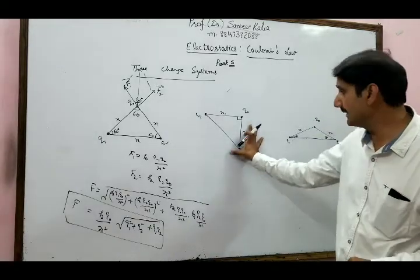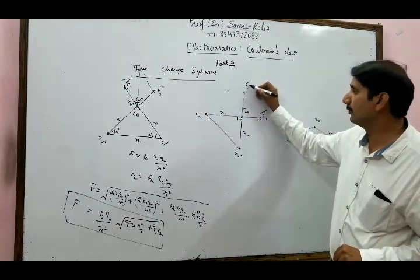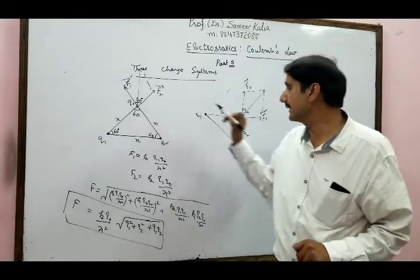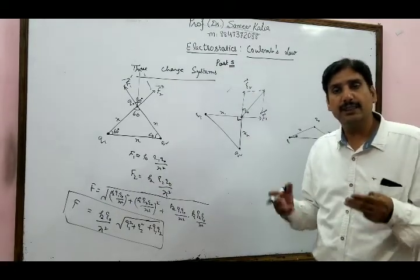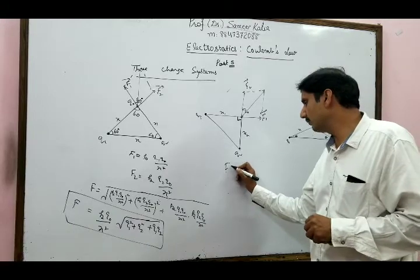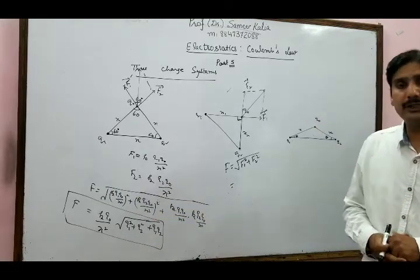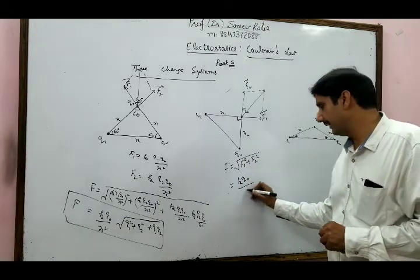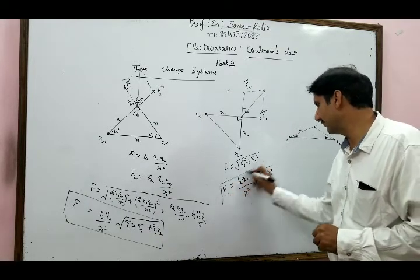The right-angle triangle case is very similar. Q1 pushes Q0 with force F1 and Q2 pushes Q0 with force F2. We complete the parallelogram, but the angle between the two forces is now 90° instead of 60°. So the resultant is √(F1² + F2² + 2·F1·F2·cos90°). Since cos90° = 0, the resultant force simplifies to K·Q0/X² · √(Q1² + Q2²).